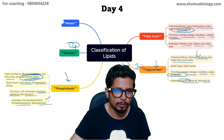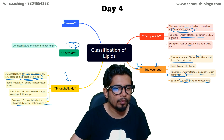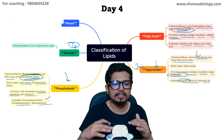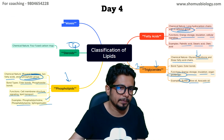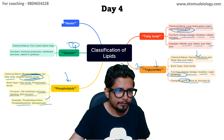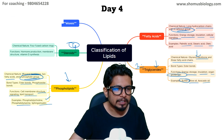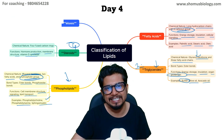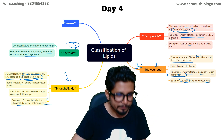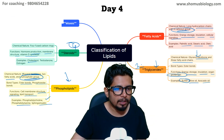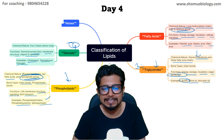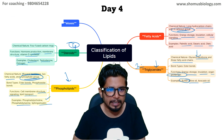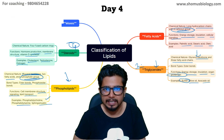The fourth type is steroids. The chemical nature is four fused carbon rings — instead of individual fatty acid branches, there is a fused carbon ring structure. Functions include hormone production, membrane structure, and vitamin D synthesis. Examples include cholesterol, testosterone, and estrogen — the major hormones involved in the sexual characteristics of males and females.